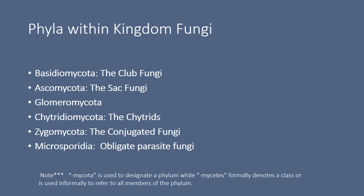The phyla are: Basidiomycota, Ascomycota, Glomeromycota, Chytridiomycota, Zygomycota, and Microsporidia. A helpful note on terminology: 'mycota' designates a phylum, while 'mycete' denotes a particular organism. For example, the fungi within Basidiomycota are called basidiomycetes, and they produce spores called basidiospores — the terminology is pretty consistent across fungi.